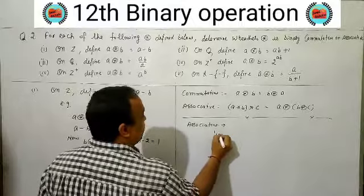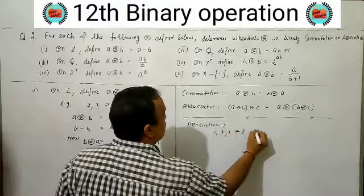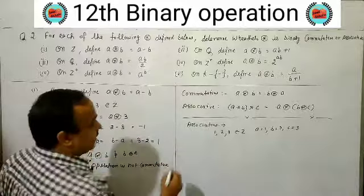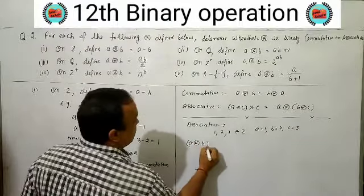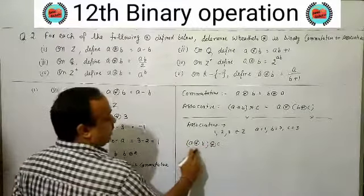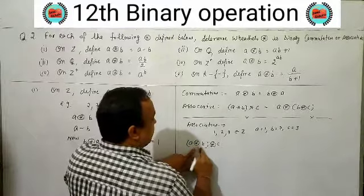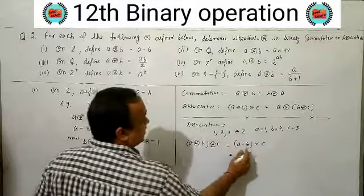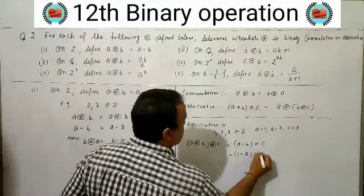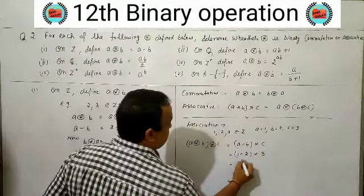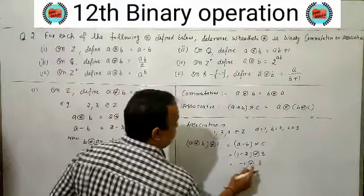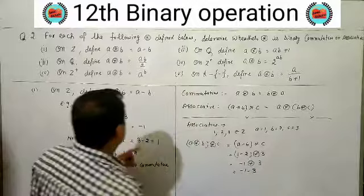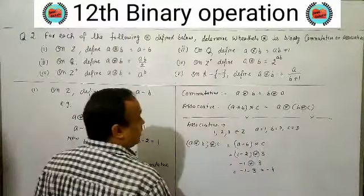For associative, we check (A★B)★C vs A★(B★C). Left side: A★B = A minus B. Taking A=1, B=2, C=3: (1★2)★3 = (1-2)★3 = (-1)★3 = -1 minus 3 = -4.